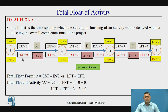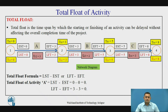Let's see the example of activity A. The latest starting time of activity A is 0 and the earliest starting time is 0, so 0 minus 0 gives 0. The latest finishing time is 3 and the earliest finishing time is 3, so 3 minus 3 is also 0. A total float of 0 means activity A is a critical activity. If the total float is more than 0, then the activity is non-critical.